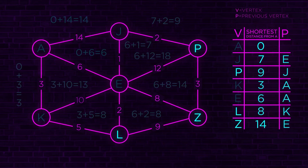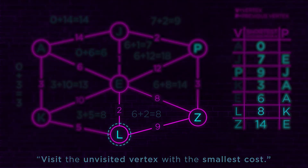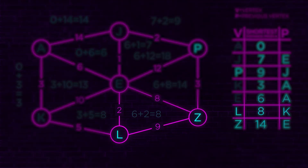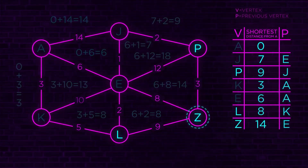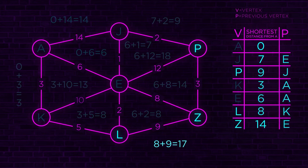Trigger the algorithm again: visit the unvisited vertex with the smallest cost. That's L, with a cost of eight. Its only unvisited neighbor is Z. The cost: eight plus nine equals 17. We have a new candidate cost of 17 to Z, but the previous cost was 14. Seventeen is not cheaper than 14, so we don't need to update anything. We can rule out L.